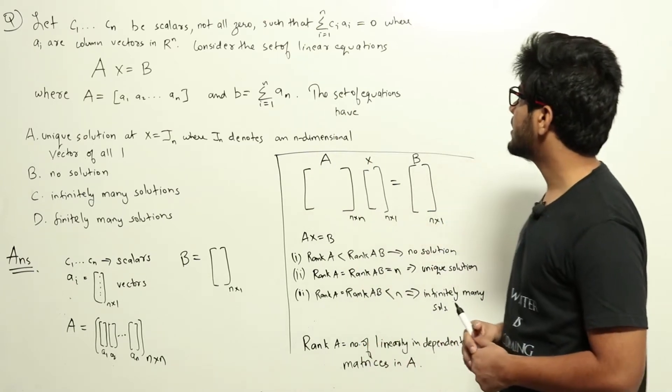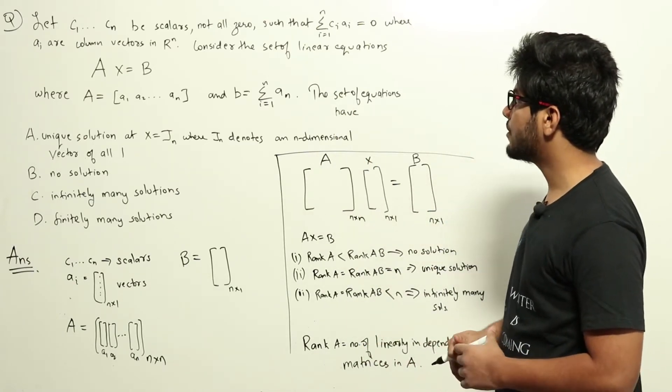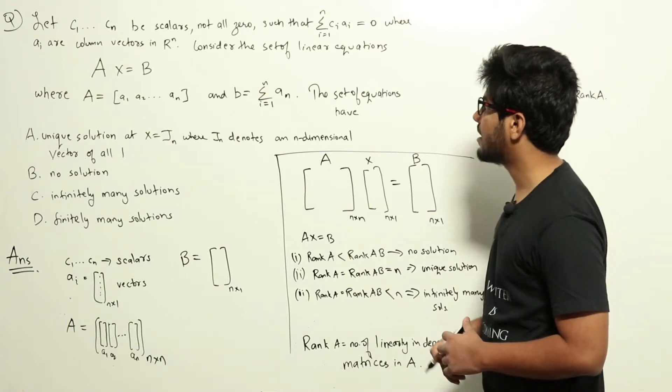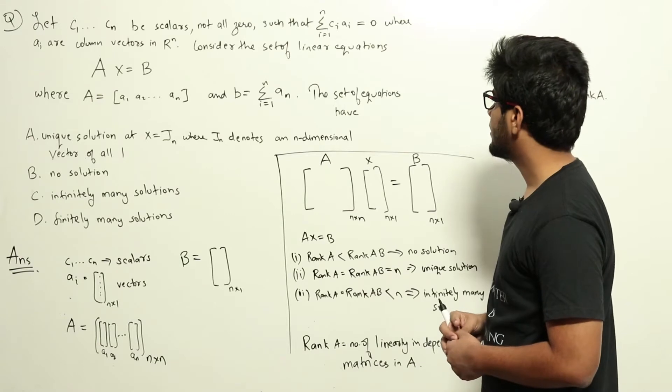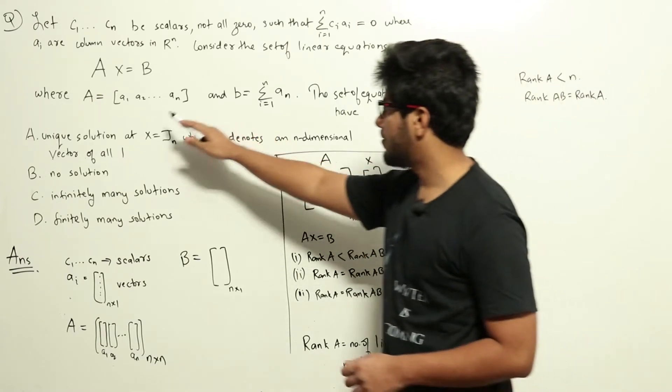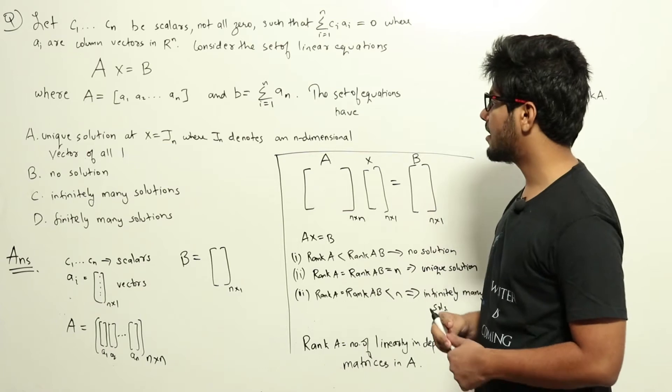Consider the set of linear equations Ax equals b, where A equals a1, a2, up to an, and b equals sigma i equals 1 to n ai. The set of linear equations have—we have been given four options regarding solutions.